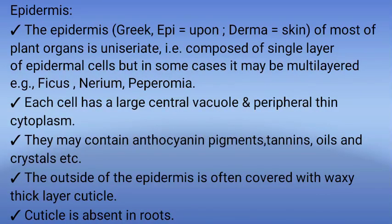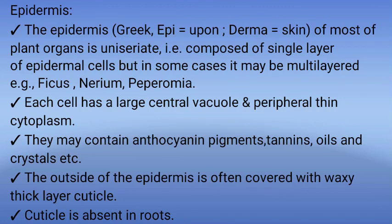Number 1: epidermis. Epidermis is derived from a Greek word 'epiderma' — epi means upon, derma means skin. The epidermis of most plant organs is uniseriate, which means single-layered, composed of a single layer of epidermal cells. But in some cases it may be multilayered or multiseriate — for example, Ficus, Nerium, and Peperomia. Each cell of epidermis has a large central vacuole and peripheral thin cytoplasm. They may contain anthocyanin pigments, tannins, oils, and crystals. The outside of the epidermis is often covered by a waxy thick layer called the cuticle. Cuticle is absent in roots.